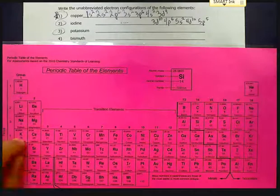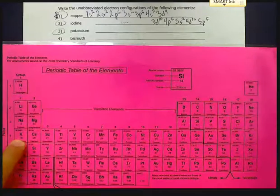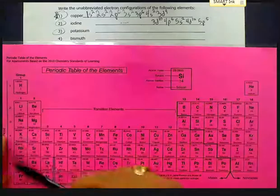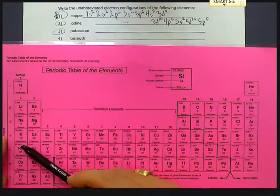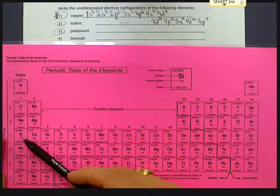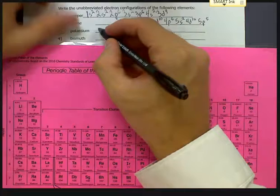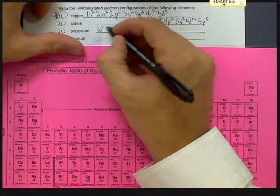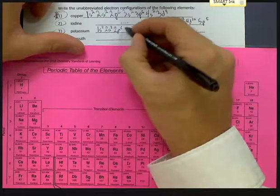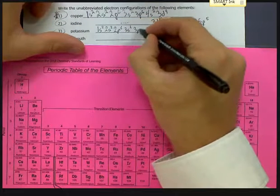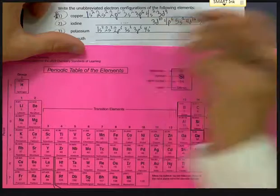Potassium, a little bit more straightforward. We know it's going to end in the fourth energy level, s block, first column. So we know it's going to end with 4s1. So we just go right down everything that comes up to it: 1s2, 2s2, 2p6, 3s2, 3p6, 4s1.